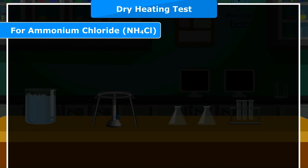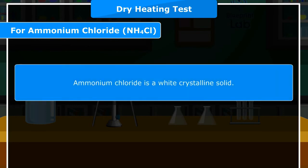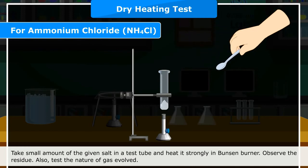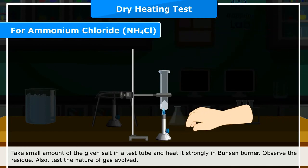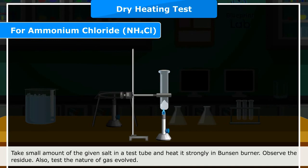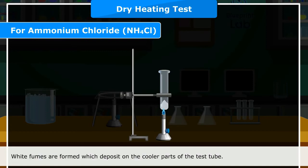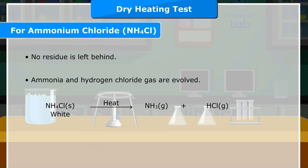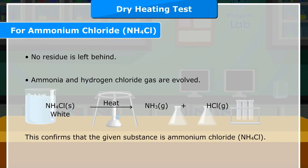For Ammonium Chloride (NH4Cl): Ammonium chloride is a white crystalline solid. Take a small amount in a test tube and heat it strongly in a Bunsen burner. Observe the residue and test the nature of gas evolved. White fumes are formed which deposit on the cooler parts of the test tube. No residue is left behind. Ammonia and hydrogen chloride gases are evolved. NH4Cl (solid, white) on heating gives NH3 (gas) + HCl (gas). This confirms the given substance is ammonium chloride, NH4Cl.